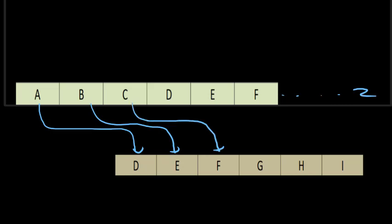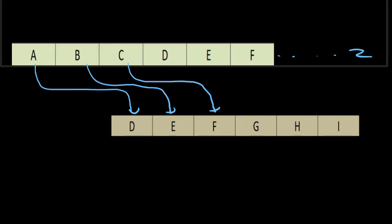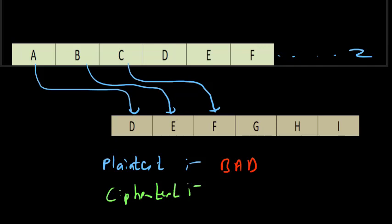Suppose we have a plaintext message BAD. How to get the cipher text of this? Wherever B comes, we have to write E. Instead of B, write E. Instead of A, we write D. Instead of D, the alphabet is G. So BAD becomes EDG.